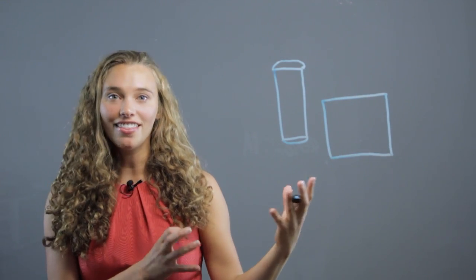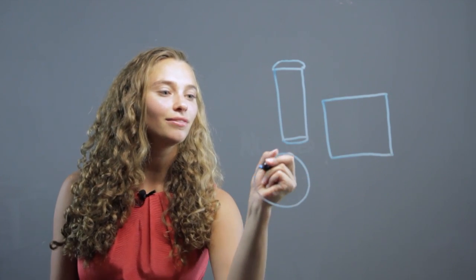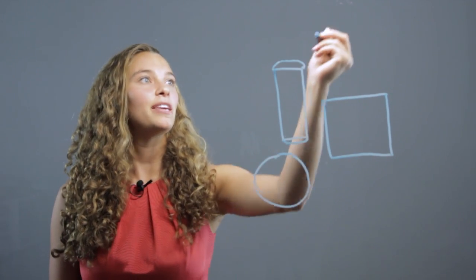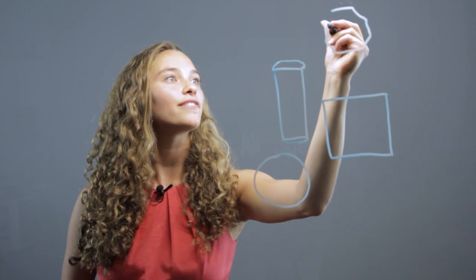You can have them identify the different shapes, like a rectangle or a circle, some round shapes, maybe an octagon, so they get familiar with the different types of shapes.